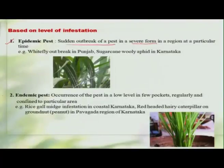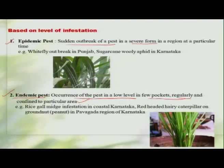The second category in this group is the endemic pest, where the pest occurs at a low level in certain pockets but occurs regularly and is confined to a particular area. For example, the rice gall midge infestation in the coastal belt of Karnataka and Kerala, where this pest is seen only along the coastal border and regularly comes in certain pockets. Such pests are named endemic pests.